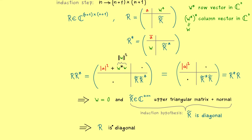So this is a general result to remember: every upper triangular matrix which is also normal has to be a diagonal matrix. Hence the Schur normal form of a normal matrix has to be a diagonal matrix, and this finishes our proof — the spectral theorem is proven. We now know that normal matrices are exactly the matrices that are unitarily diagonalizable. The most important special case of normal matrices are self-adjoint matrices: the spectral theorem tells us that self-adjoint matrices are unitarily diagonalizable, meaning you can always find an orthonormal basis of eigenvectors for a self-adjoint matrix.